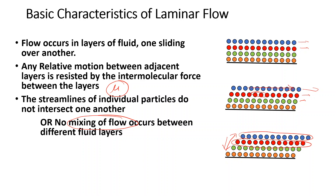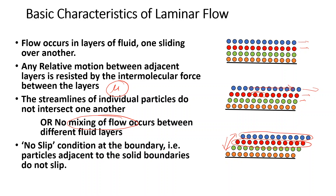Another characteristic is the no-slip condition at the boundary. This means the layer touching the solid boundary is not going to move — it will stick to the solid boundary, and whatever is the velocity of the solid boundary, that will be the velocity of the fluid layer.